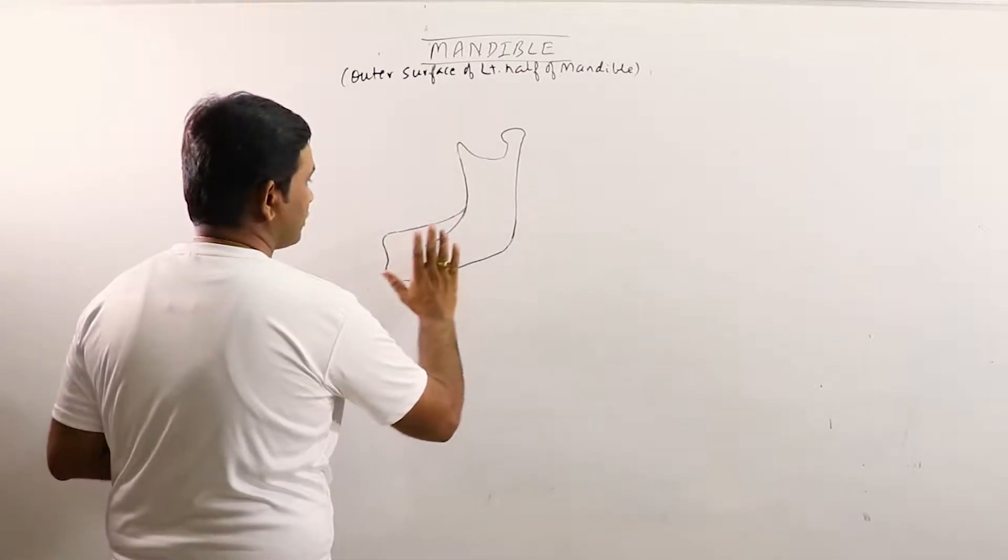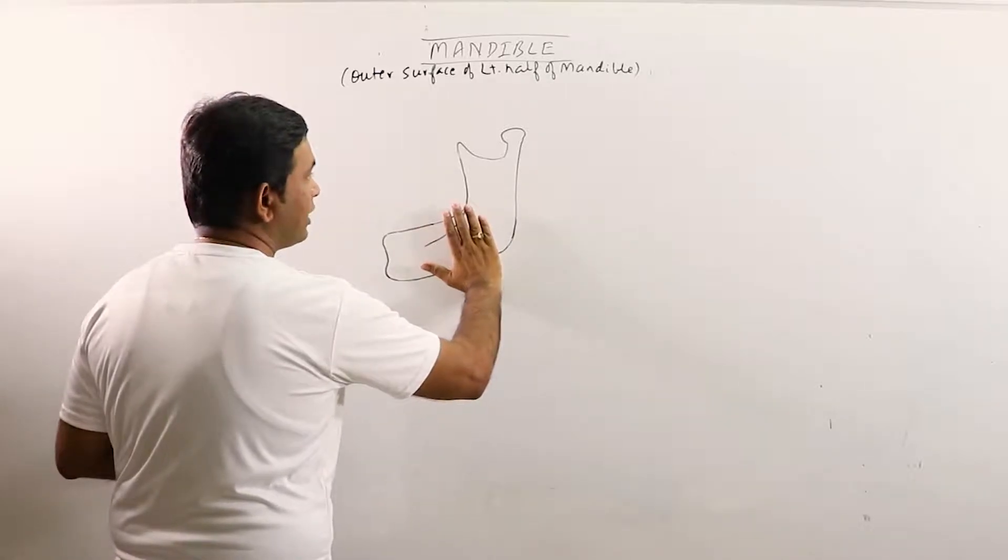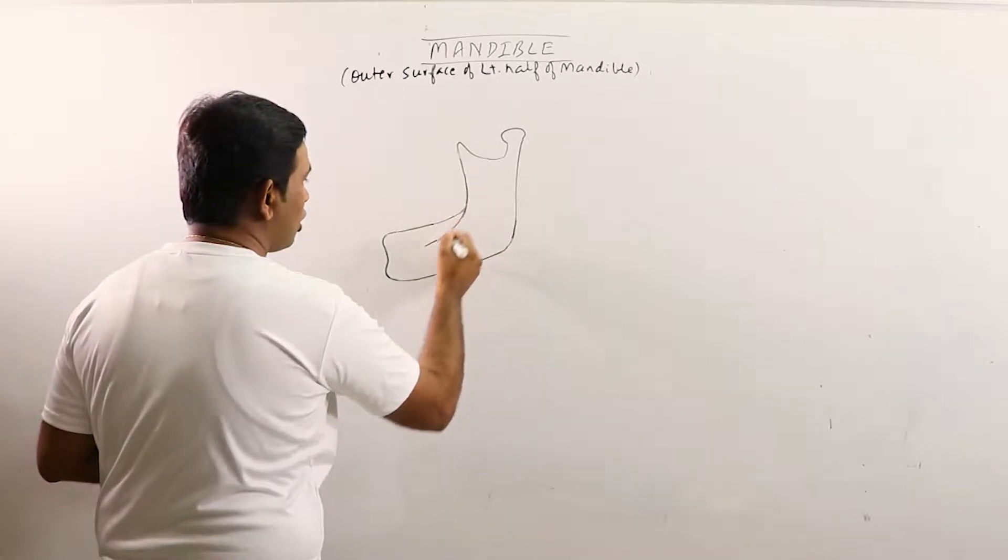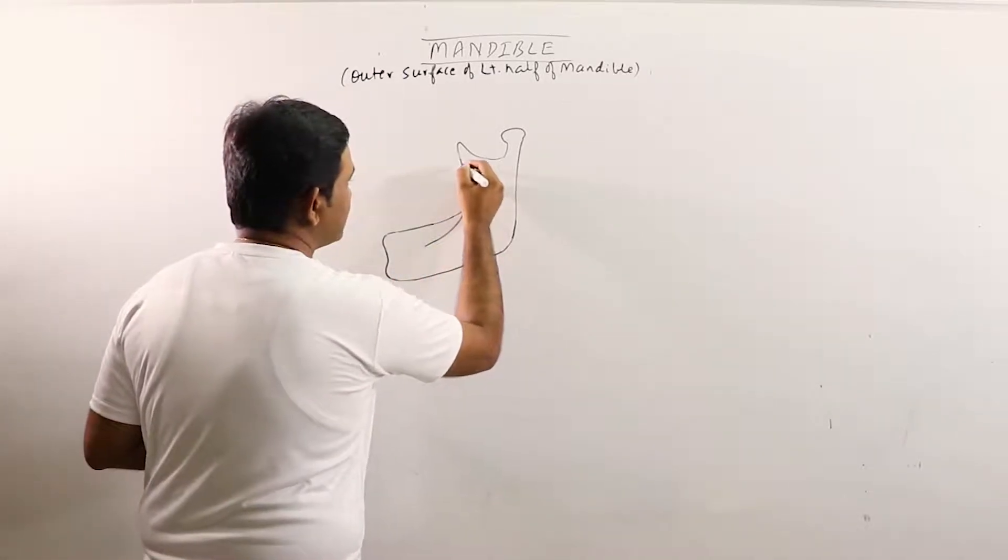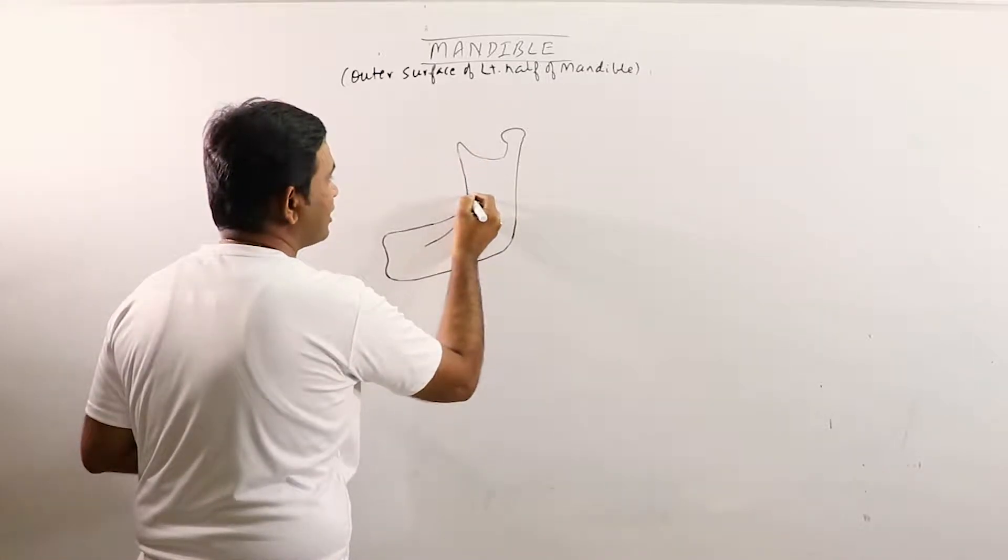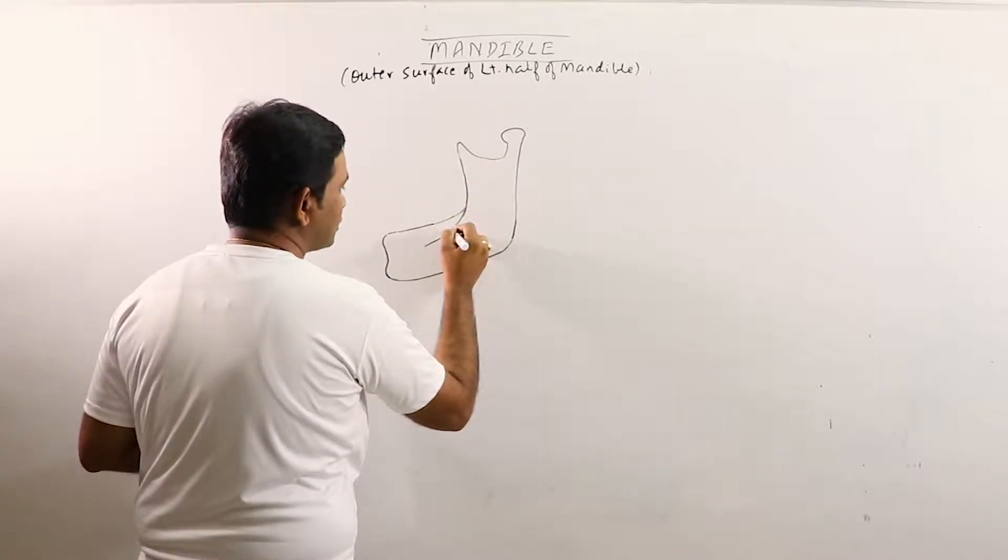We can observe that this is the body of mandible and this one is the ramus of mandible. Now this is the oblique line. This is basically the downward and oblique continuation of the anterior border of the ramus.